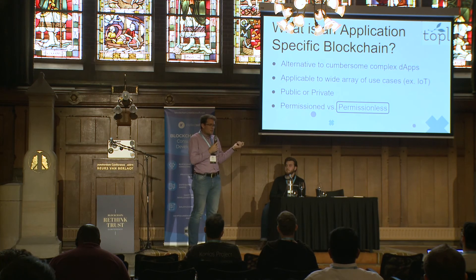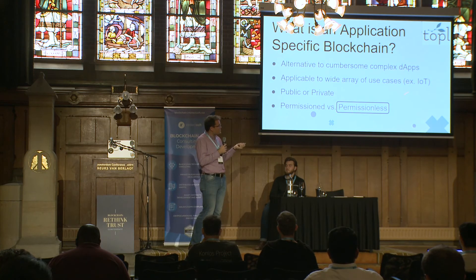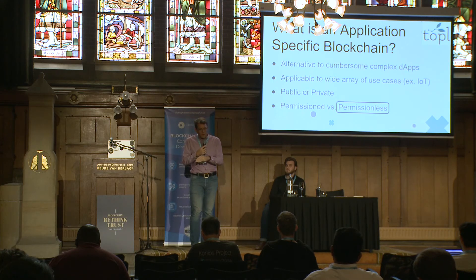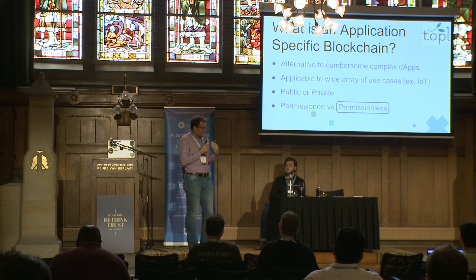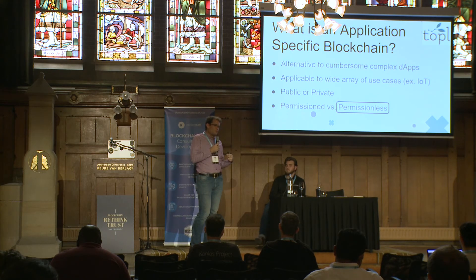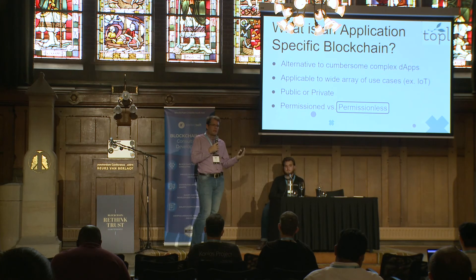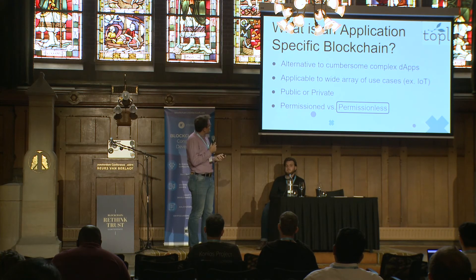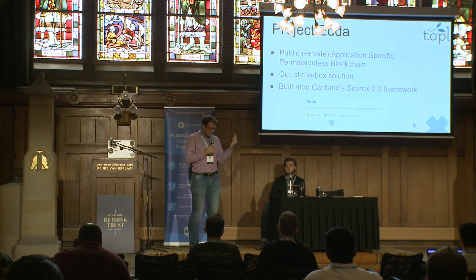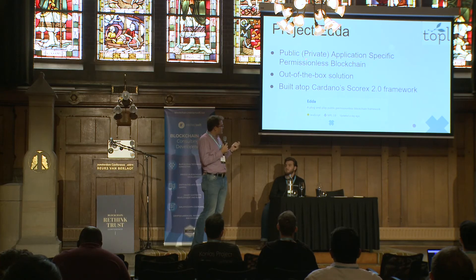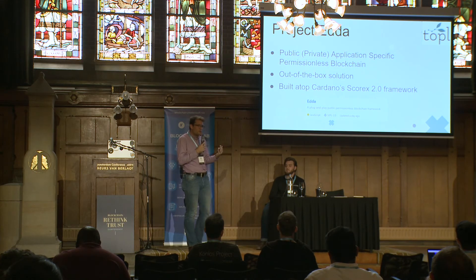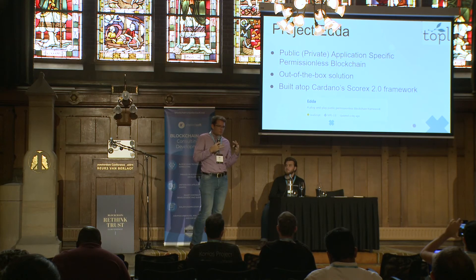So we are going to focus on the permissionless architecture, whereby anyone can join — it's open. However, you can still have a private implementation. By designing security around open access rather than restricting who can have access, you say from the outset: I'm going to let everyone have access and build my security around that. We're working on this sort of project at Topple. We've termed it Project ETA, which is an application-specific permissionless blockchain. We really aim for this to be an out-of-the-box solution that organizations can download from us, define their use case, and be ready for implementation.